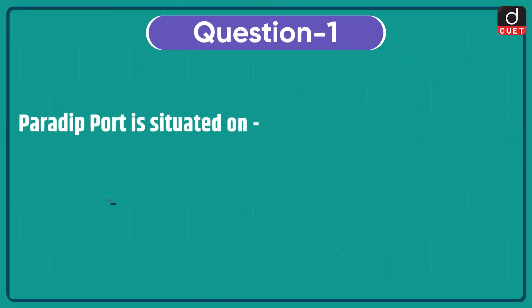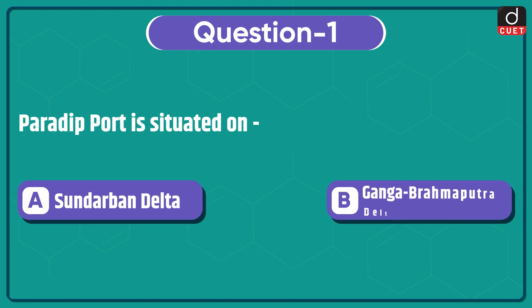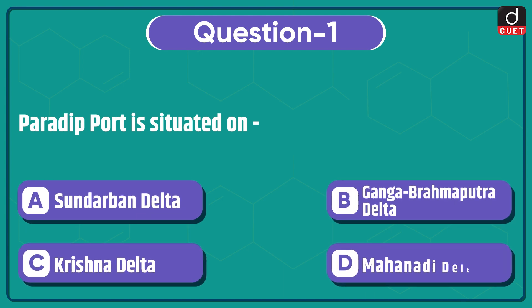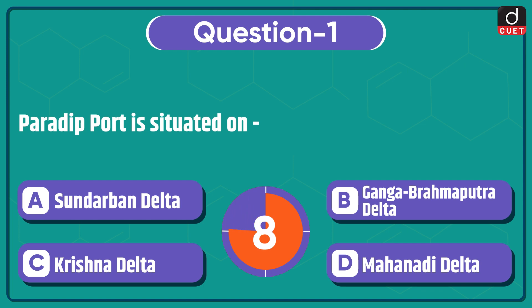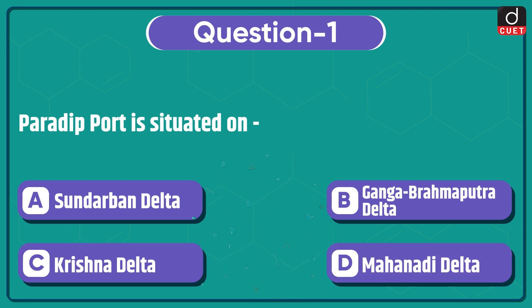Now let's begin today's session. First question: Paradip Port is situated on which delta? Sundarbans Delta, Ganga-Brahmaputra Delta, Krishna Delta, or Mahanadi Delta? The correct answer is option D, Mahanadi Delta.